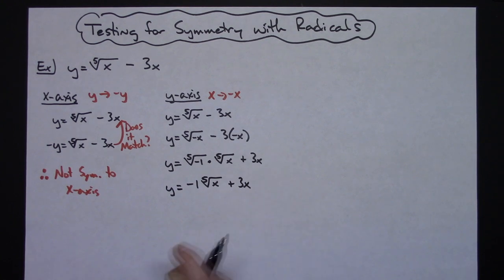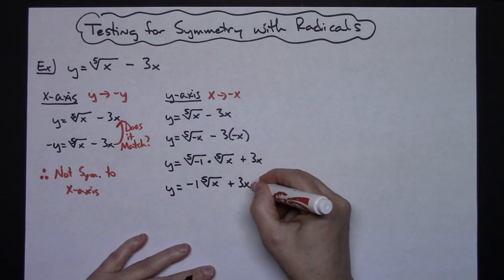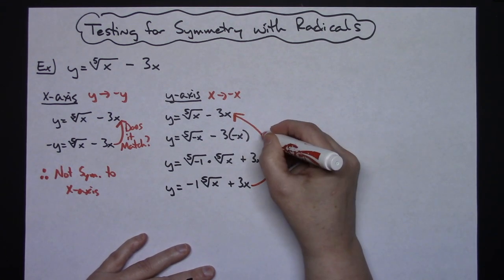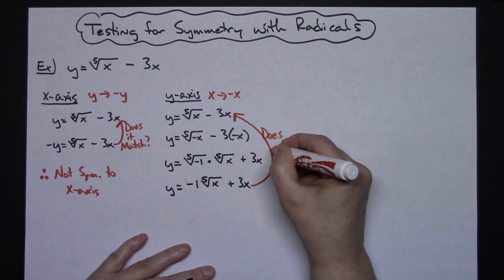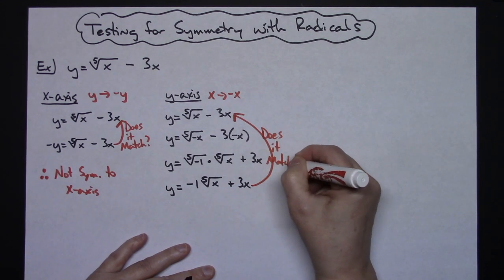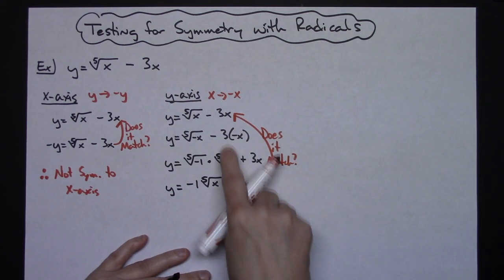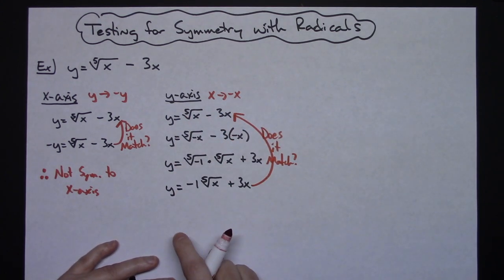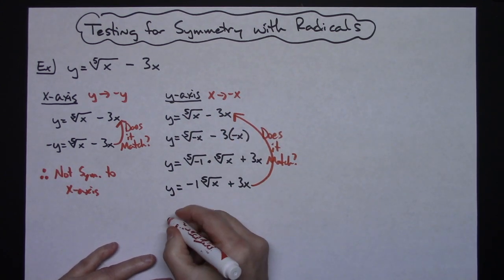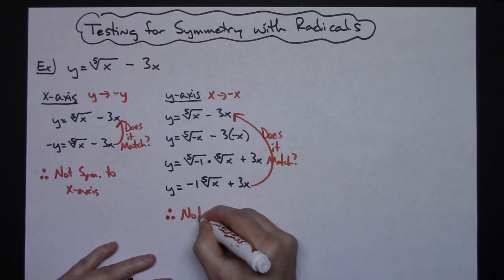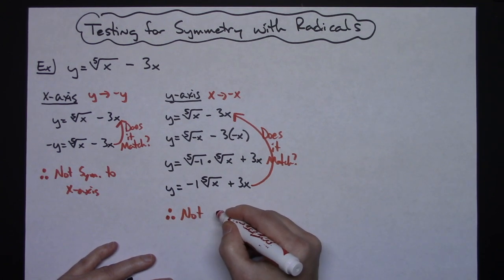I've simplified as far as I can. Does this match the original equation? No — the plus versus minus doesn't match, and the negative in front of the fifth root doesn't match. Therefore, it is not symmetric to the y-axis.